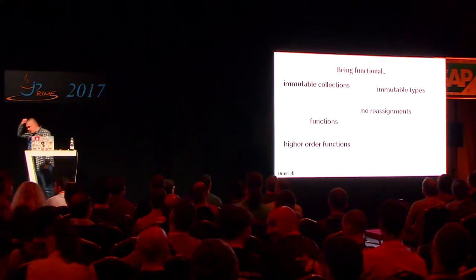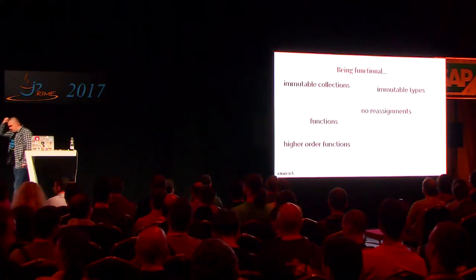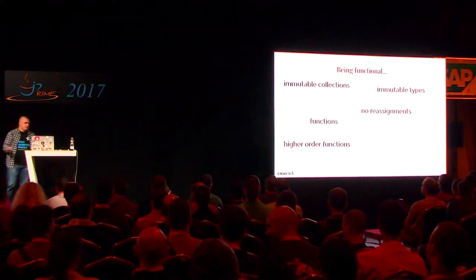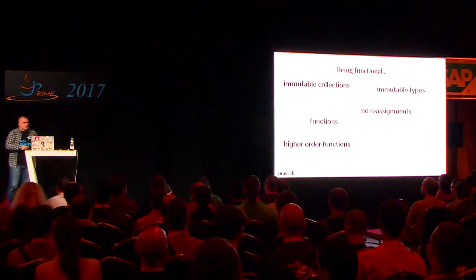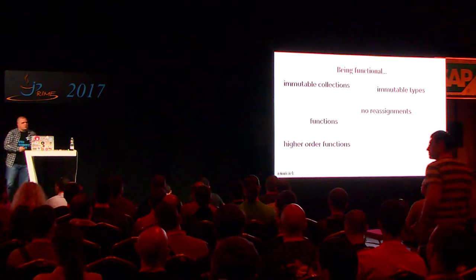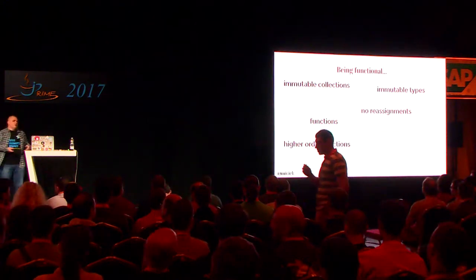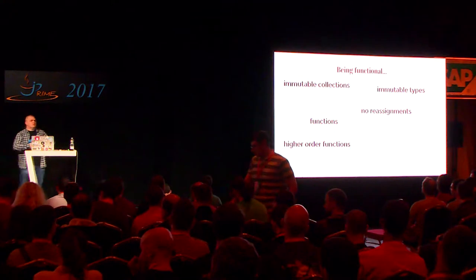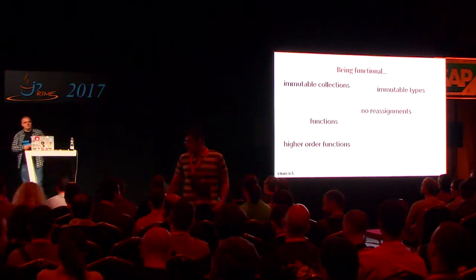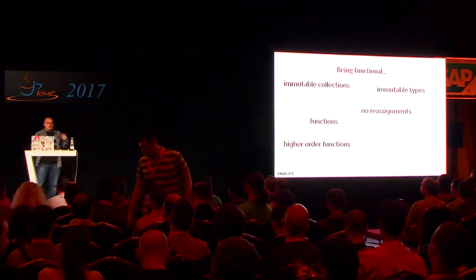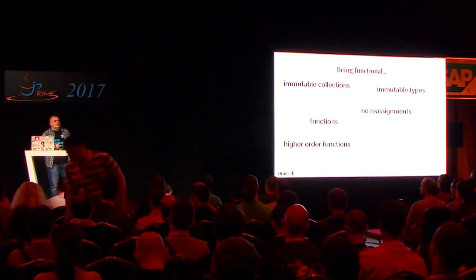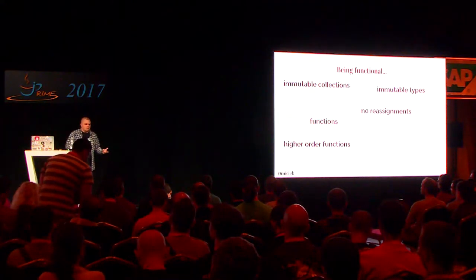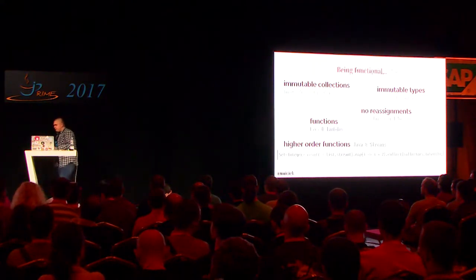So what does it mean to be functional as a functional programmer? Most of you probably know the answer already. The usual answers are: using immutable collections, creating immutable types, using higher-order functions — functions that take functions as parameters and return functions. And we have lambdas and streams in Java since the Java 8 release.